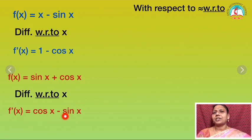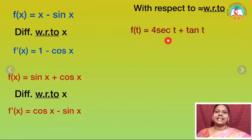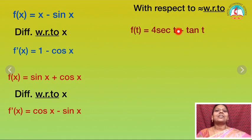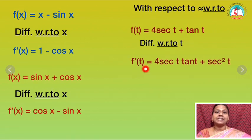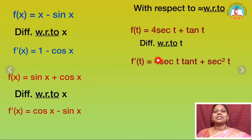Now if I have a function with some other variable: f of t is equal to 4 into secant t plus tan t. I have to differentiate with respect to what? My right side variable is t. Therefore I have to differentiate with respect to t. So f dash of t equals: secant t differentiation is secant t tan t — and 4 is a coefficient, not a constant, so it is not equal to 0. I am writing 4 secant t tan t, plus tan t's differentiation which is secant square t.